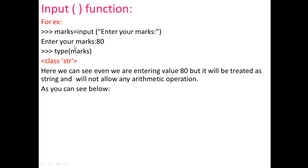If you enter 80, that is numeric data, but the computer will consider it a string by default because we used the input function. If you want to check the data type of marks, you write the function type() — type() is the function used to display the data type of a variable. So type(marks) will show the output as class str, meaning str is the data type, even though we entered the numeric value 80.